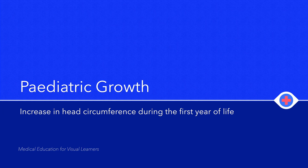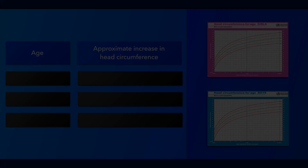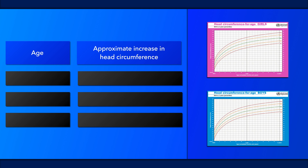This video will discuss the typical increase in head circumference that occurs during the first year of life. It applies to infants with growth parameters, such as weight, that were appropriate for gestational age at birth. Babies grow at a rapid pace. Their head circumference tends to increase by up to one-third in the first year of life, and by four years of age, most head growth is already complete.